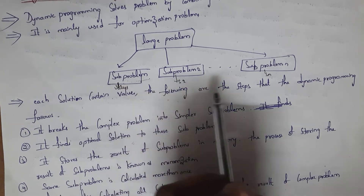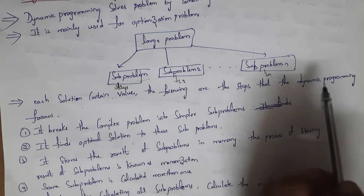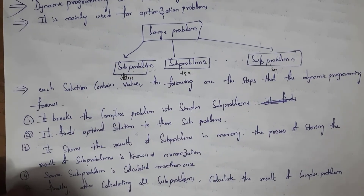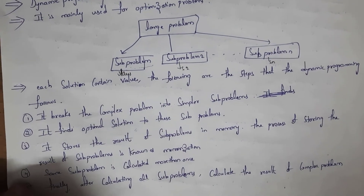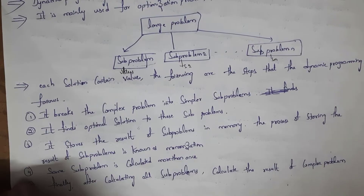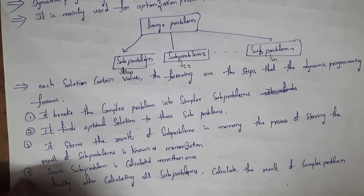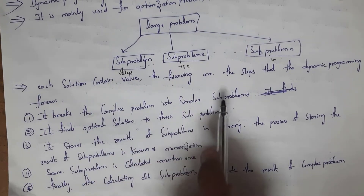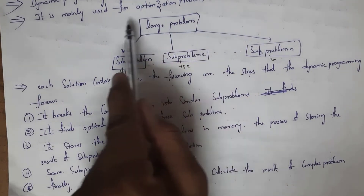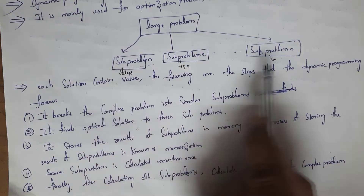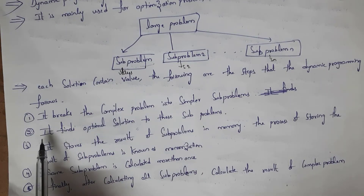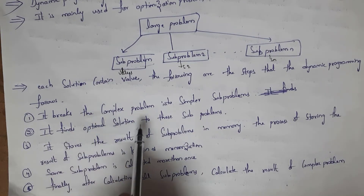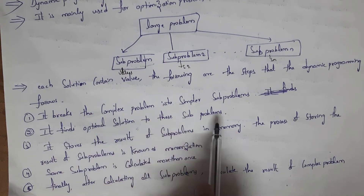The following are the 5 steps that dynamic programming will follow. The first step is it will break the complex problem into smaller sub-problems, as shown in the diagram. In the second step it will find the solution to each sub-problem.